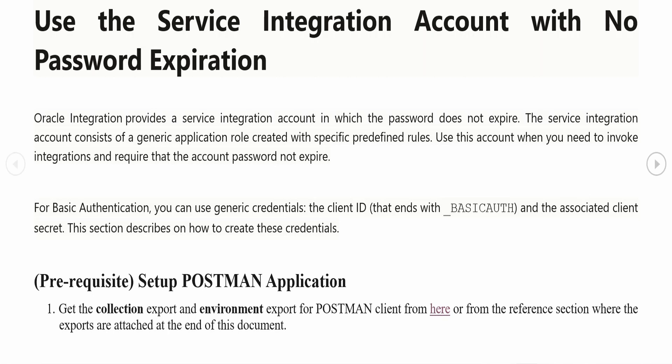The main challenge in maintaining such applications is that passwords associated with those usernames expire in three or four months for usual IDCS license holders. So we need to update those passwords in all places — third-party applications, in-house applications like VBCS calling integration, and integration connections calling Oracle APIs. If we miss even one place, the user will get locked out.